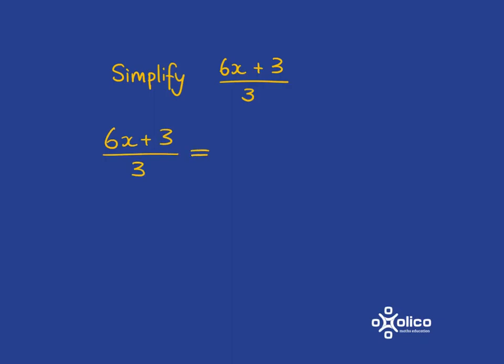Well, yes, this has got the simplest form of factorization, simply taking out a common factor of 3. And then we'd be left with 3(2x + 1)/3.